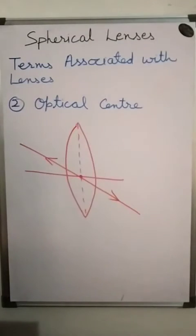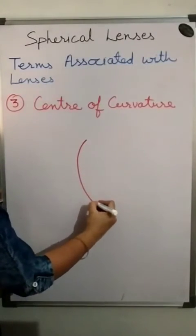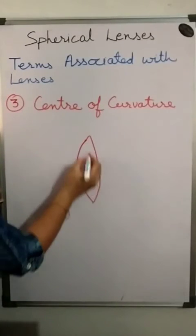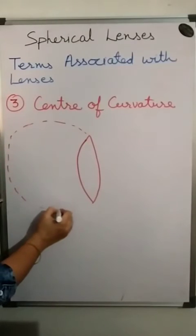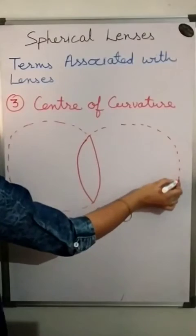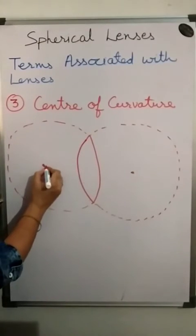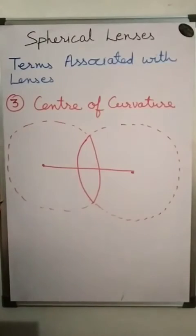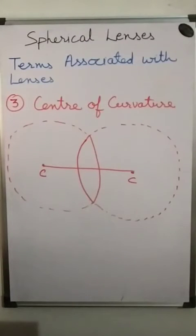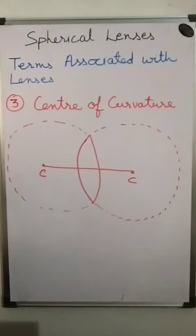Now, center of curvature. Take this lens and complete the circles on both sides. The center of each of these circular arcs is known as the center of curvature. So every lens has two centers of curvature. However, in the case of plano-convex and plano-concave lenses, the center of curvature of the plane surface is supposed to be at infinity.